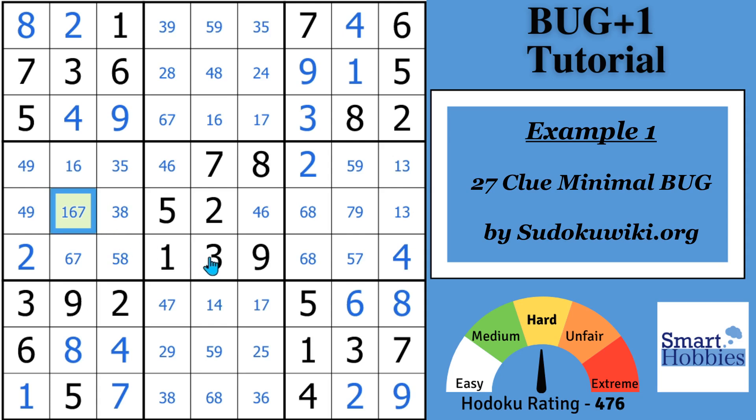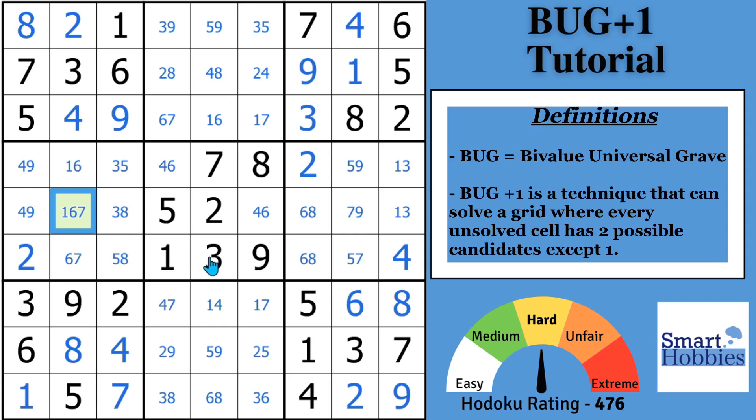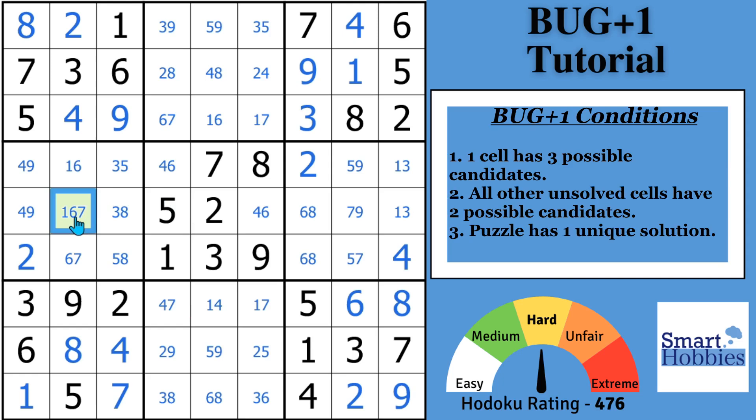So what is a bug? Bug stands for By Value Universal Grave. Bug Plus One is a technique that can solve a grid where every unsolved cell has two possible candidates except for one. And so there's three conditions here that you're going to notice. One, one cell has three possible candidates, which is our green cell right there. Two, all other unsolved cells have two possible candidates. So if you look to the rest of this puzzle, everything that's unsolved, these are all bi-value cells, meaning they all have two candidates remaining. And the third condition is that the puzzle must have one unique solution.